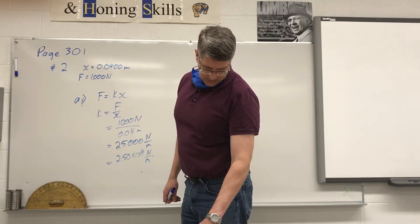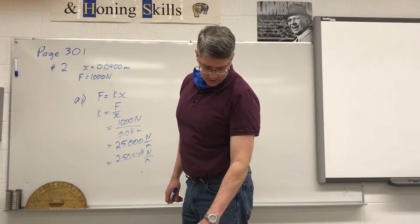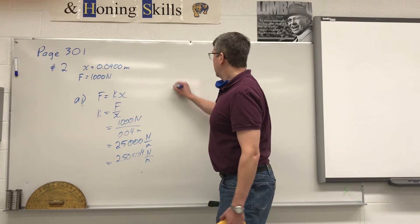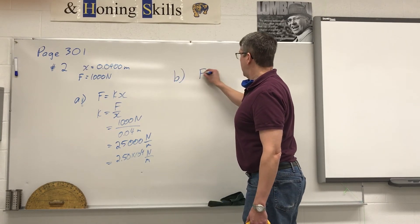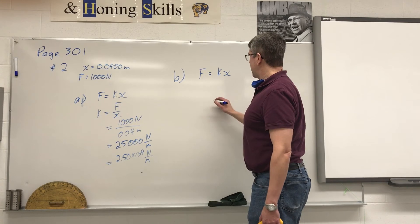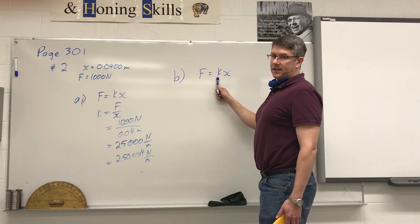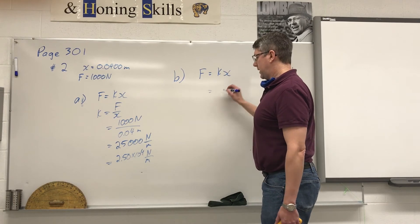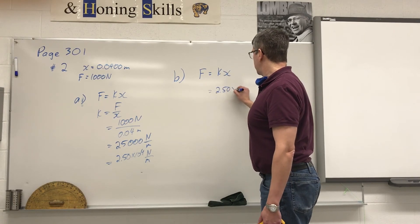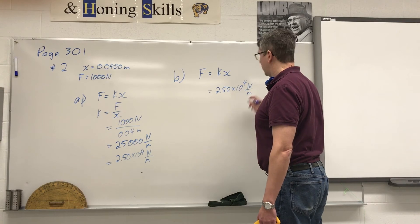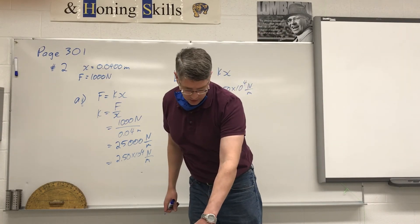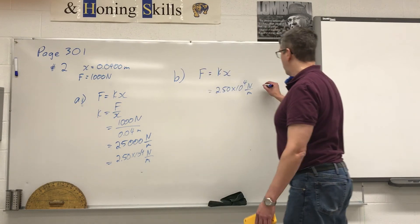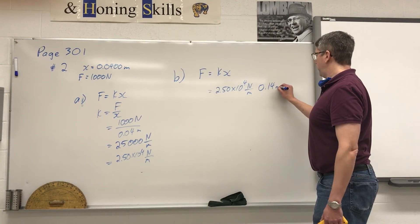Part B: if the spring is compressed a distance of 14 centimeters, what force must have been exerted on it? We're looking at the same equation, F equals K times X. Our K value stays the same; our X value is going to change. So using our same K value of 2.50 times 10 to the power of 4 newtons per meter, our compression has changed from 4 centimeters to 14 centimeters, or 0.14 meters.